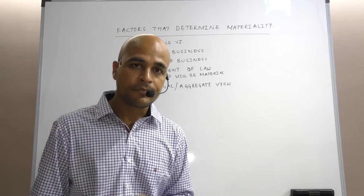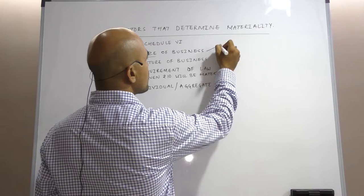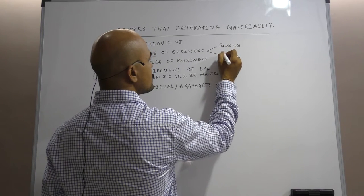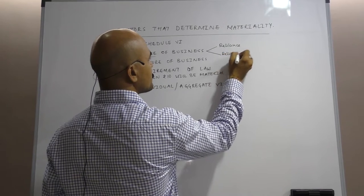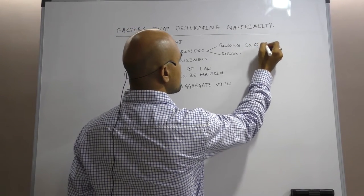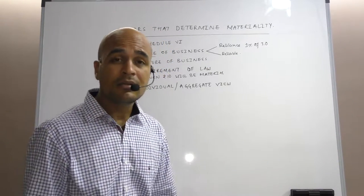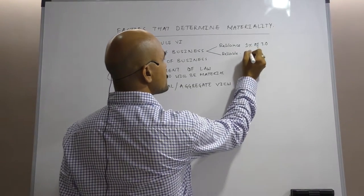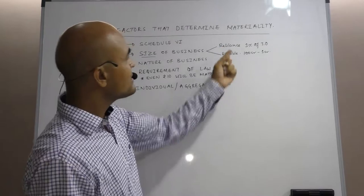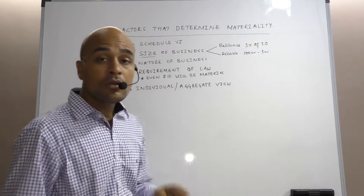The second point is related to size of business. Now this is a very important part. Let us take an example. Say you are auditing Reliance Industries and you are auditing a small company. In case of Reliance, if we take one percentage of turnover of the company, it is just a few thousand crores. If I speak of a smaller company whose total revenue from operation is 100 crores, if I apply 1%, it comes to 1 crore. Look at the difference. In case of Reliance, it is thousands of crores. In case of a smaller company, 1 crore. So obviously the size of business goes a long way in determining the materiality level.